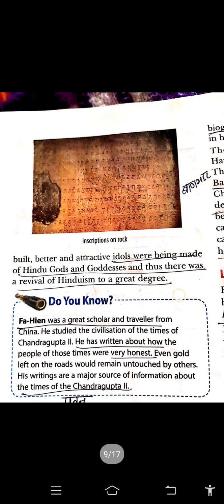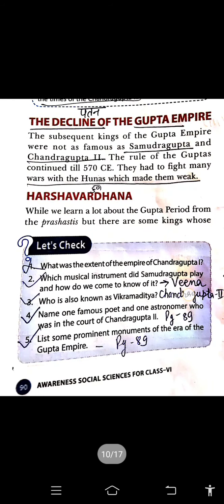In religion, we have already read that the Gupta Empire showed preference for the deity Vishnu. Attractive idols of Hindu gods and goddesses were made. There was a great scholar and traveler from China who wrote about his experiences during the time of Chandragupta 2nd — his name was Fahiyan. His writings are a major source of information about the time of Chandragupta 2nd. After that, we have to read about the decline of the Gupta Empire — how it came to an end.